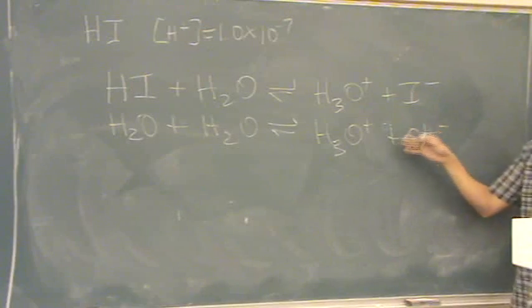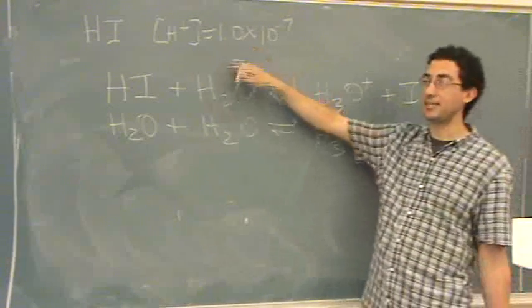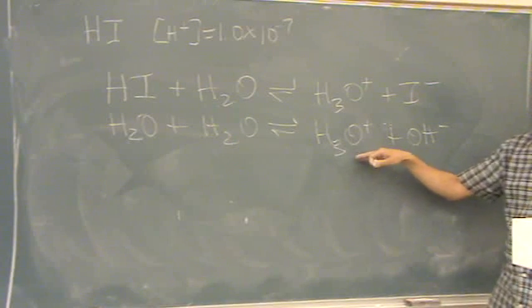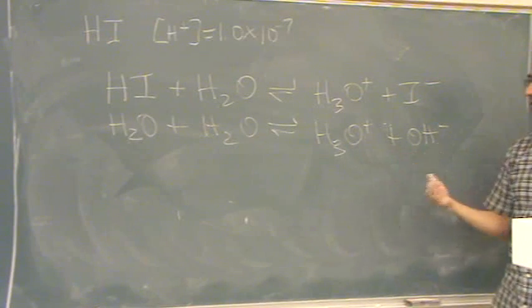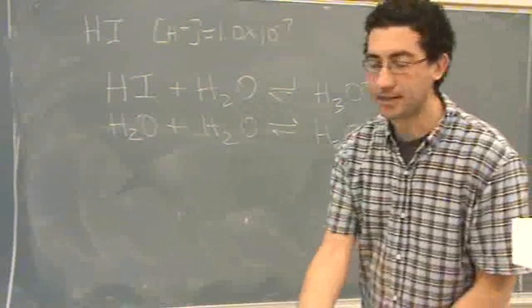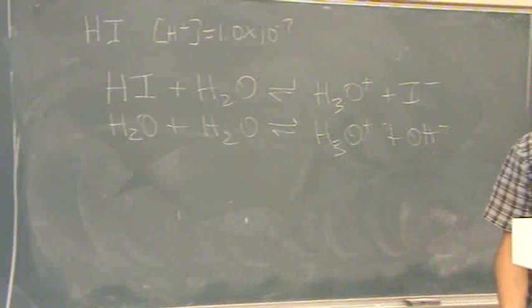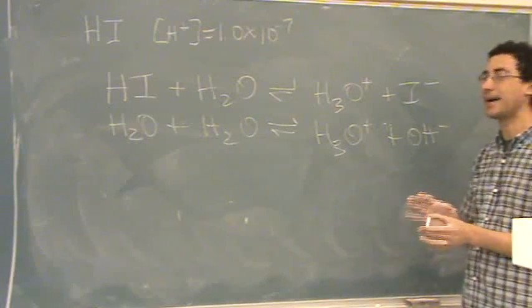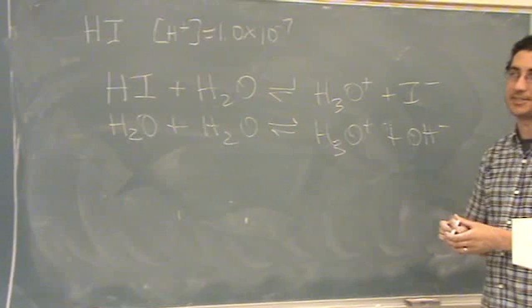...is going to contribute a significant amount to the H plus concentration. Remember, this is like 10 to the minus 7 also, so we're going to contribute a significant amount when we're doing this calculation. And that's why you have to write this down. So when it becomes very dilute, turns into sort of an ice table kind of question.